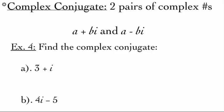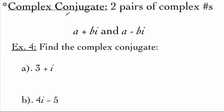In just a little bit, we're going to be dividing some complex numbers, but in order to do that, we're going to have to use something called a complex conjugate. Conjugates are two pairs of complex numbers that have opposite signs on their imaginary pieces. So if we were looking at a complex number in standard form, like a plus bi, its conjugate would be a minus bi.